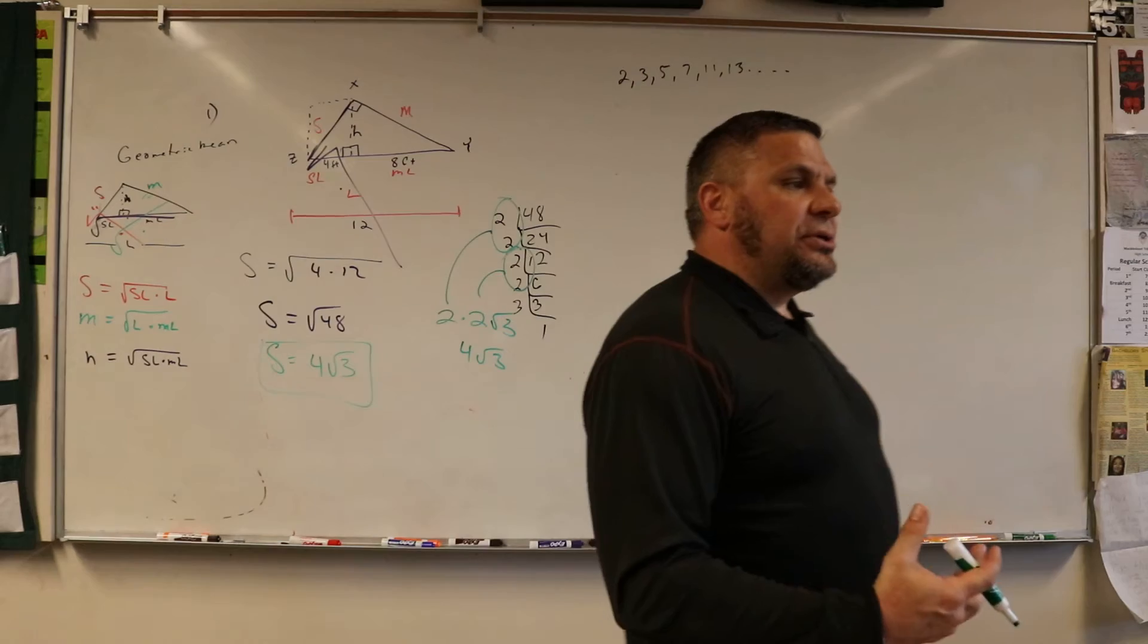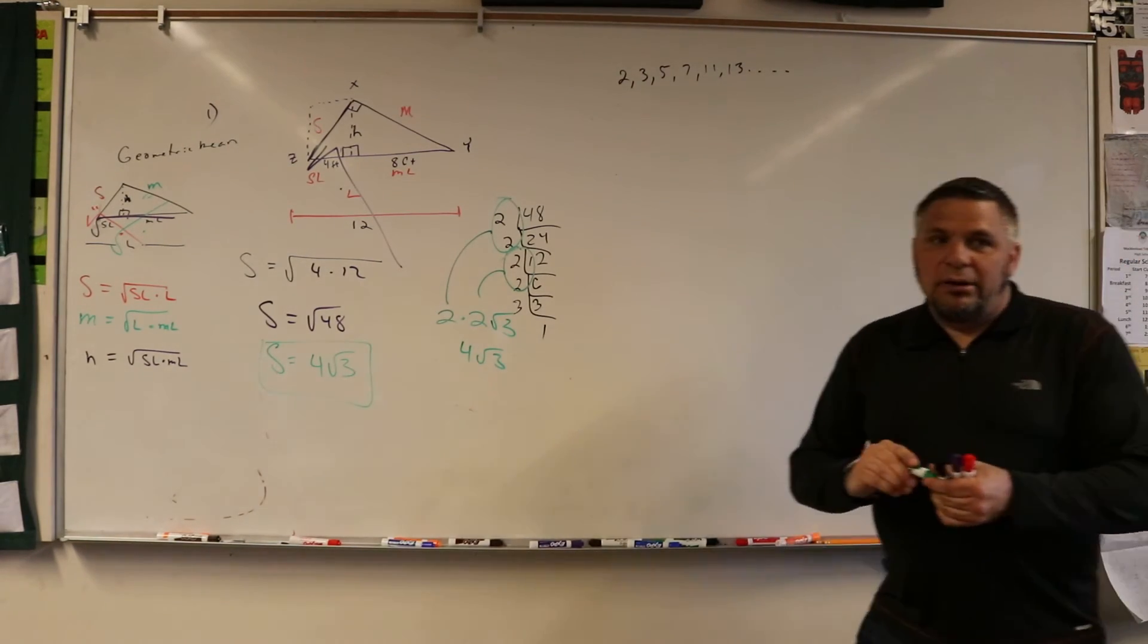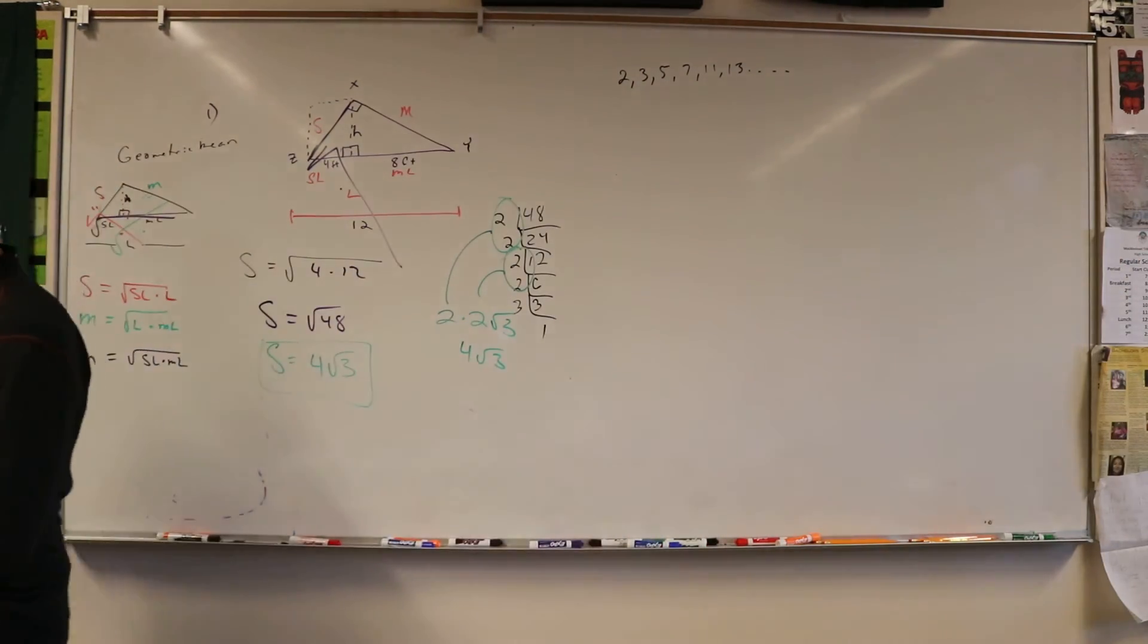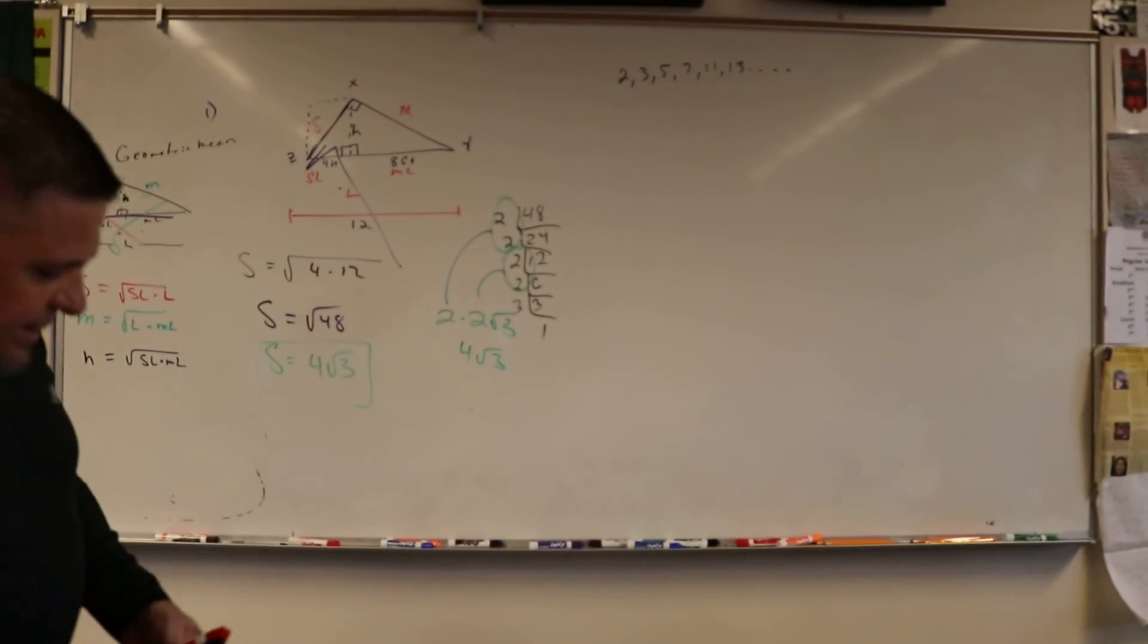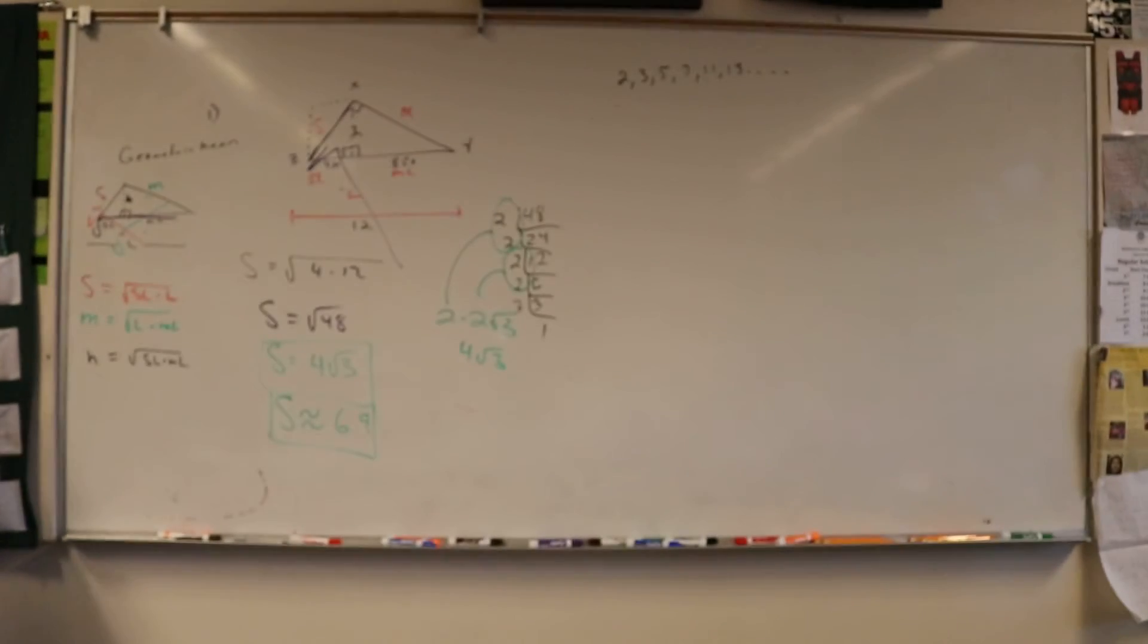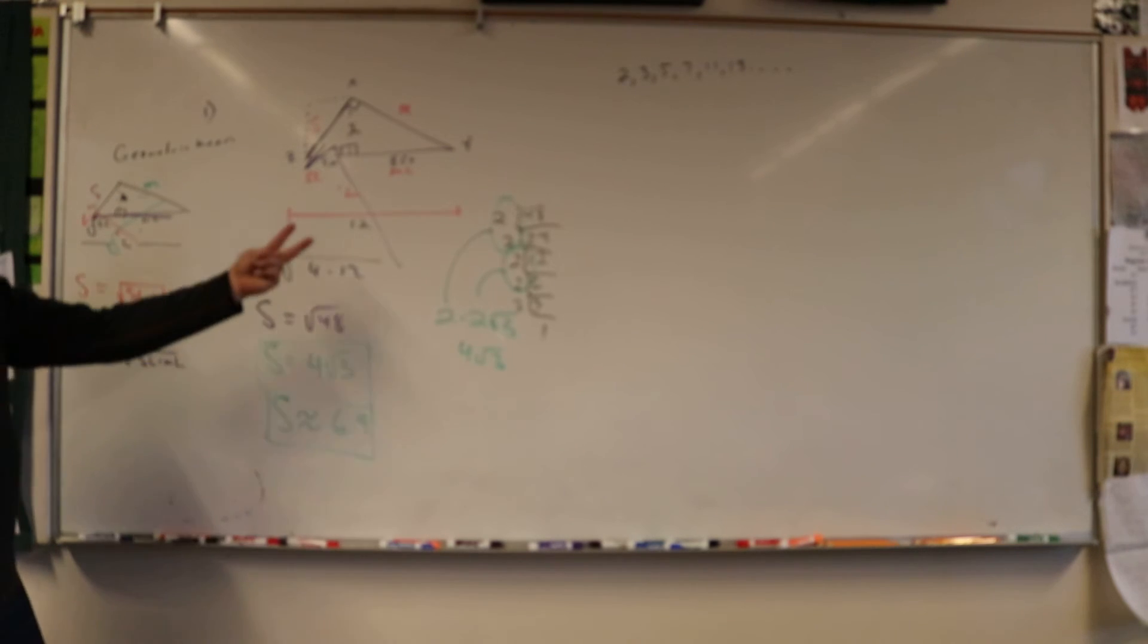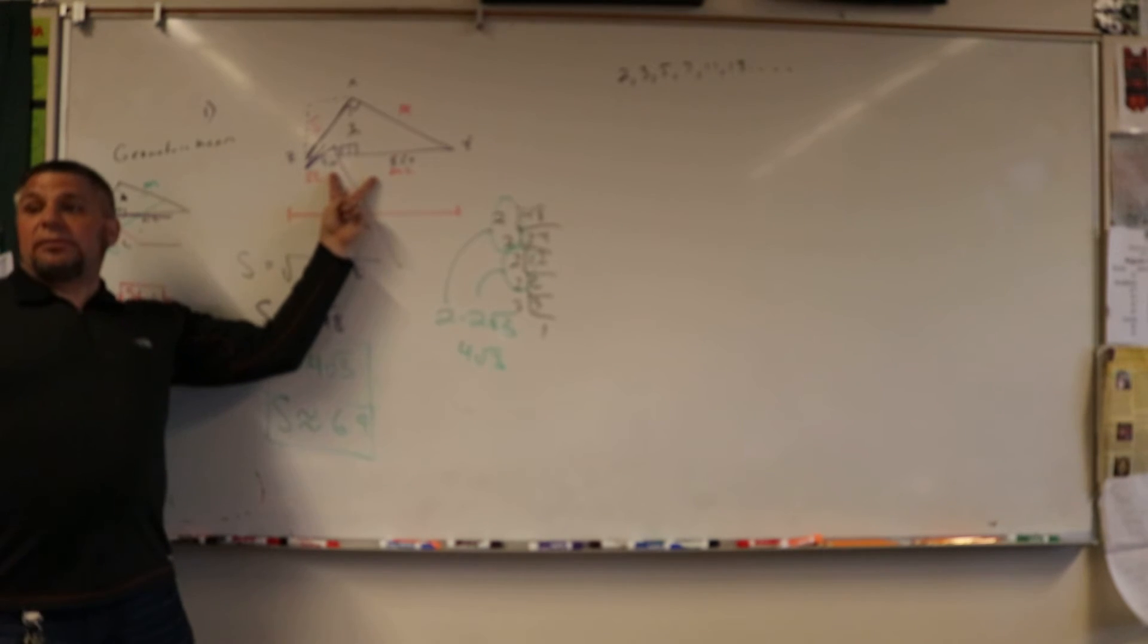If they want you to, you can put this into a calculator. 4 times the square root of 3, you get 6.9, that's approximately 6.9. Where did we get 4 from? 12 is the 4 plus the 8, makes the large side.